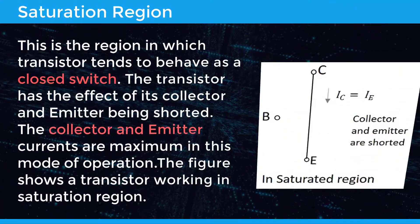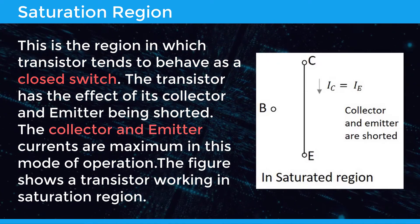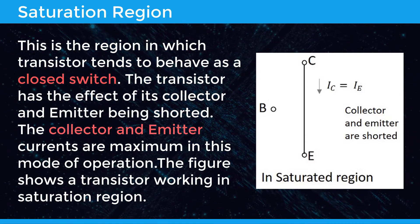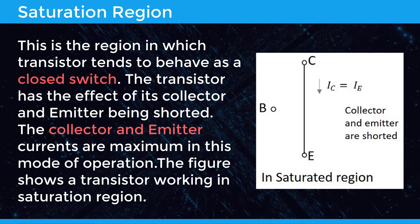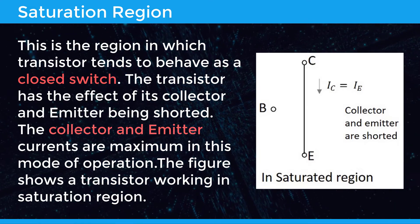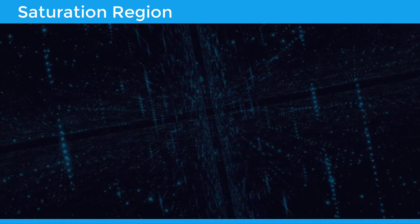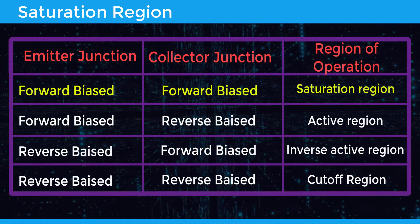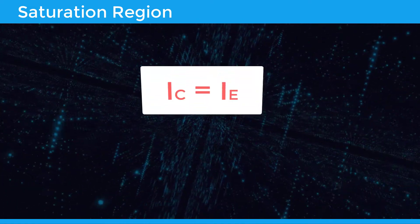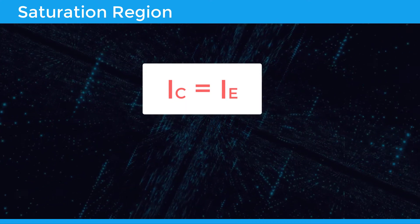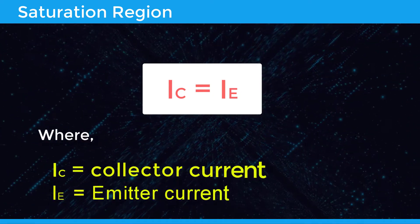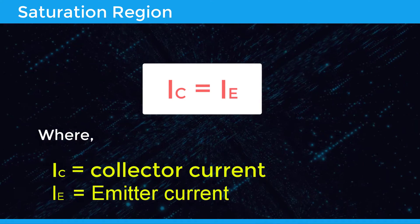In the saturation region, transistors tend to behave as a closed switch. The transistor has the effect of its collector and emitter being shorted, and the collector and emitter currents are maximum in this mode of operation. The figure shows a transistor working in saturation region. The transistor operates in the saturated region when both the emitter and collector junctions are forward biased. In saturation: IC = IE, where IC is the collector current and IE is the emitter current.